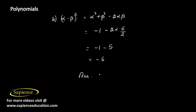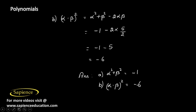So the answer to the first part, α² + β², is -1, and the second part, (α - β)², is -6. If you have any doubts, feel free to discuss in the comment section. Thank you.